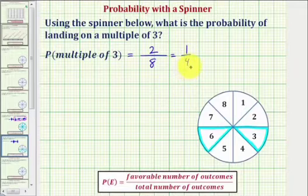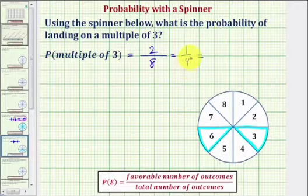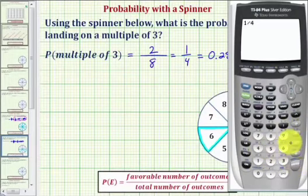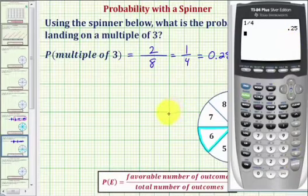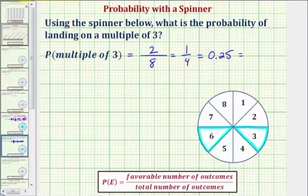We often see probability expressed as a decimal or a percentage, so let's also show those. We should recognize one-fourth as equivalent to twenty-five hundredths, or zero-point-two-five. If we don't recognize this, we can convert a fraction to a decimal by dividing — one divided by four equals point-two-five. To convert to a percentage, we multiply by one-hundred and add a percent sign, or move the decimal point to the right two places and add a percent sign. So this is equal to twenty-five percent.